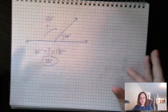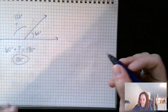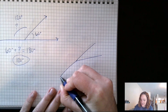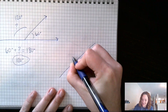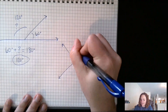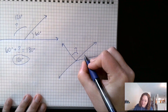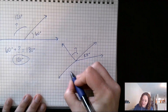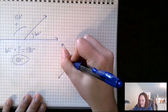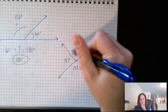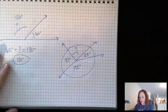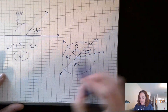Let me do one more example using a circle — same idea. Let's say I have several angles around the circle and I'm trying to find one unknown piece. Let's say one is 23 degrees, another is 172 degrees, and another is 87 degrees — it looks almost like a right angle. Going all the way around is 360 degrees, so I'll add all the known pieces together.